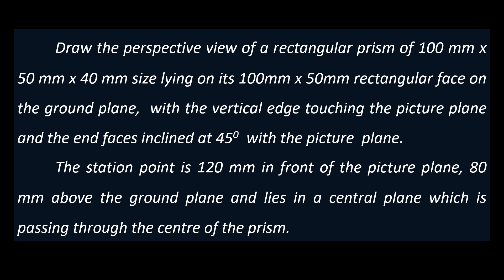Draw the perspective view of a rectangular prism of 100×50×40mm size, lying on its 100×50mm rectangular face on the ground plane, with a vertical edge touching the picture plane and the end faces inclined at 45 degrees with the picture plane. The station point is 120mm in front of the picture plane, 80mm above the ground plane.